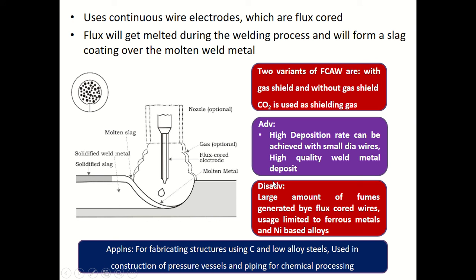Advantages of FCAW include a high deposition rate achievable with small diameter wires, high quality weld metal deposit, and excellent appearance. Limitations include a large amount of fumes generated by flux cored wires, and its usage is limited to ferrous metals and nickel-based alloys.